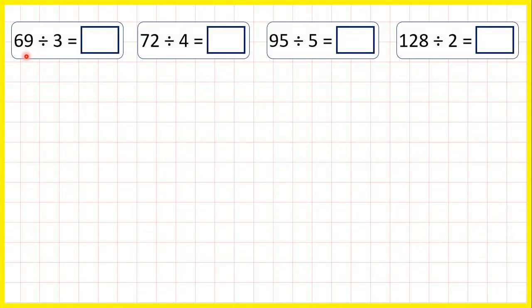Now let's divide using expanded division. So for 69 divided by 3, we can start by writing the question out like this, with the divisor on the left.